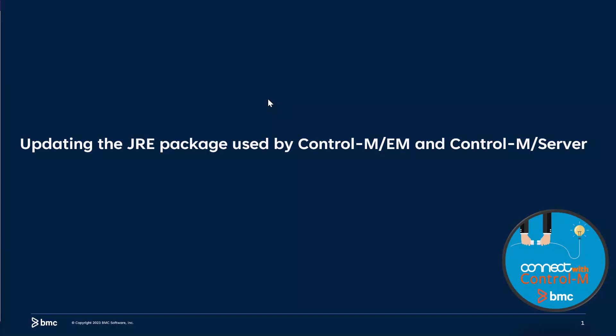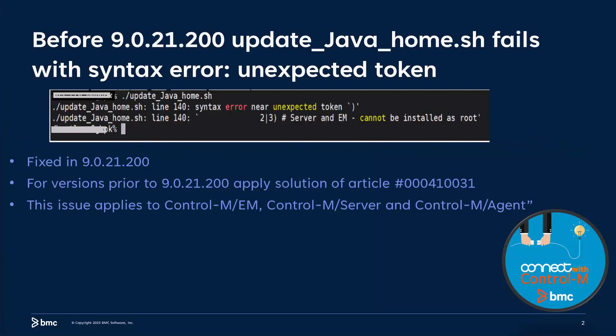Thank you, Trini, for the introduction. Today I will be demonstrating the procedure to update the Java package used by the Control-M Enterprise Manager and the Control-M Server. Let's start with the JRE package used by the Control-M Enterprise Manager. Before that, I want to mention that if you are performing this procedure on an Enterprise Manager version previous to 9.21 Fixpack 200, you might get an error while executing the update Java Home script. In that case, please apply the solution described in the article number shown on the screen.